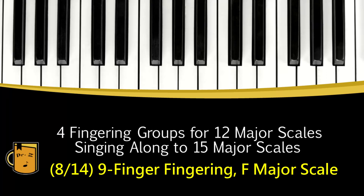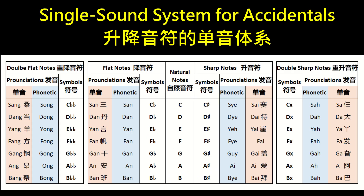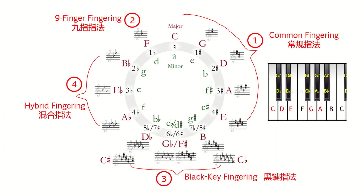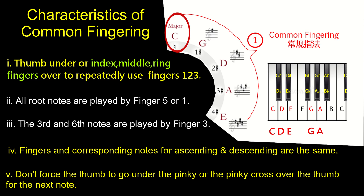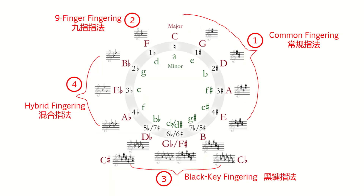This is Lesson 8: 9-finger fingering for the F major scale, part of a series on 4 fingering groups for 12 major scales with singing along. Lesson 1 introduced the 4 fingering groups. Lesson 2 presented the single sound system for all musical accidental notes. Lesson 3 used the C major scale to illustrate the 5 characteristics of common fingering. Lessons 4, 5, 6, and 7 utilized common fingering in D, E, G, and A major scales — at 1 to 4 o'clock positions on the circle of 5ths, considering C as 12 o'clock.